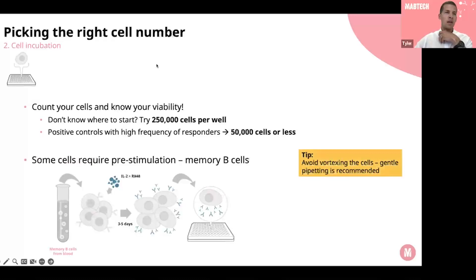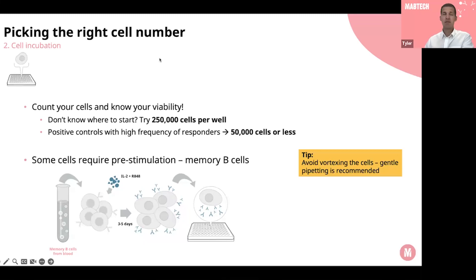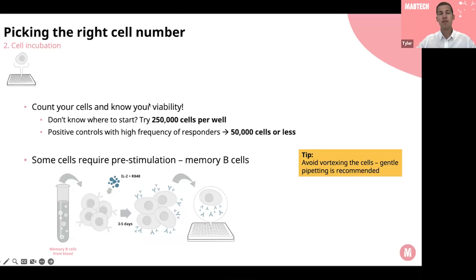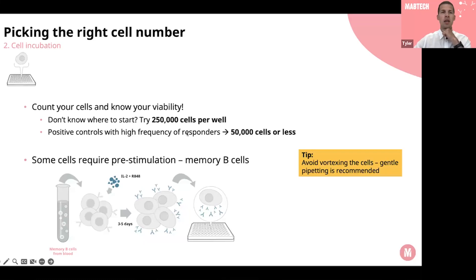The next thing to consider during cell incubation is picking the right cell number. Count your cells, know your viability, and we recommend starting around 250,000 cells per well — that gives a nice monolayer so cells aren't overlapping. For positive controls or if you expect a high frequency of responders, 50,000 cells or less can be adequate. Some cells require pre-stimulation, which we'll cover more in detail later. When handling your cells, avoid vortexing and use gentle pipetting to reduce stress on the cells.